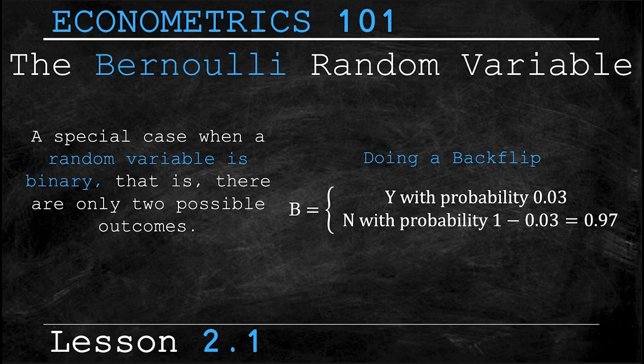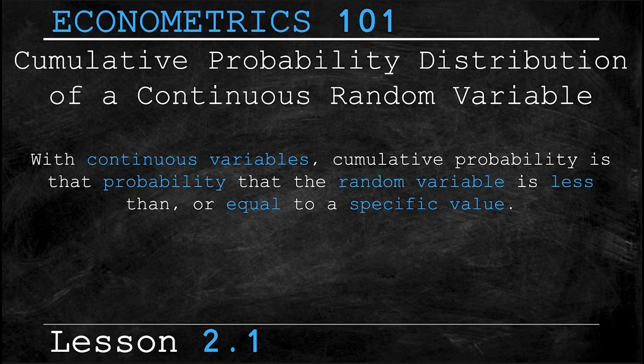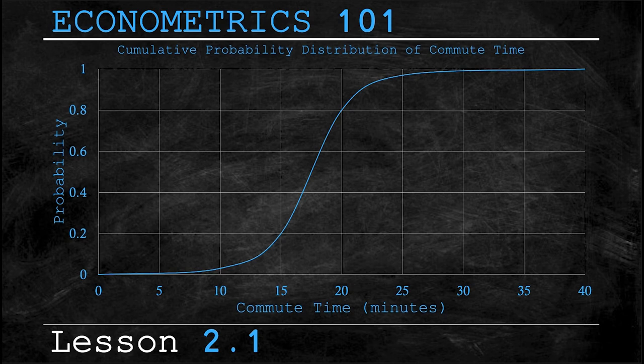Well it's a little different with continuous variables. With continuous variables cumulative probability is the probability that a random variable is less than or equal to a specific value. This is easiest to explain with an example so let's look at a cumulative probability distribution for a continuous variable. In this case your commute time to school. Suppose that you're driving to school or walking or taking the bus train helicopter whatever you take to get to school. Well your commute time takes on a continuum of values.